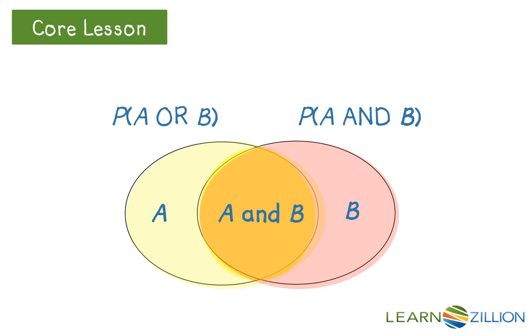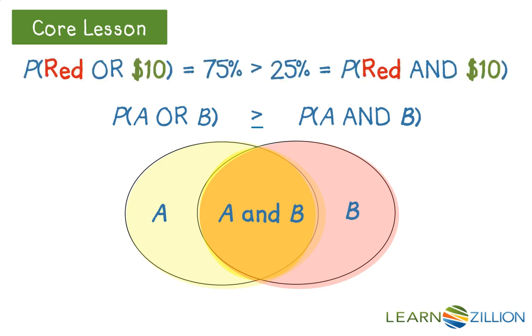the probability of union will always be greater than or equal to the probability of the intersection of A and B. And this was true in this example.